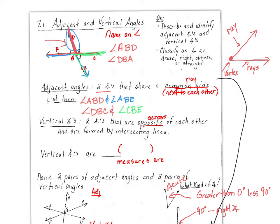Vertical angles are two angles that are across or opposite each other and are formed by intersecting lines. If I draw one line intersecting with another, and I call this angle one, this is angle two, this is angle three, and this is angle four — the ones that sit across from each other are one and three. So angle one and angle three are vertical, and so are angle two and angle four. They sit right across from each other.